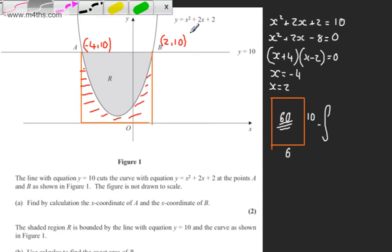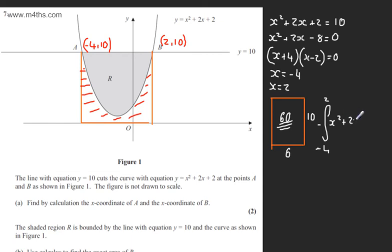So we're looking now at the integral from minus 4 to positive 2 of x squared plus 2x plus 2, and we're integrating now with respect to x. So it's going to be 60 minus. If I integrate this now I've got x squared.